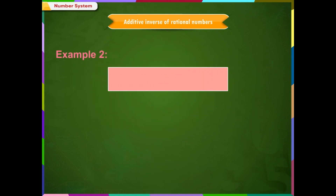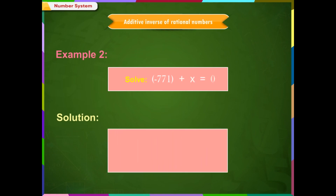Example 2: Solve -7/71 + x = 0. Solution: -7/71 + x = 0. Therefore, x = 7/71.